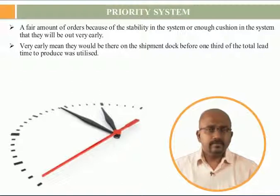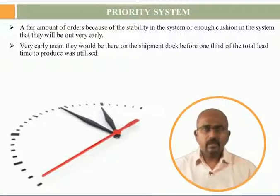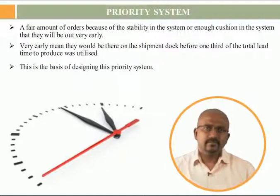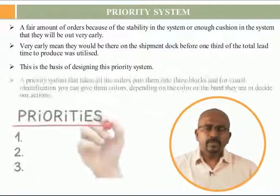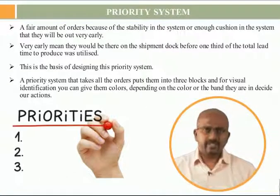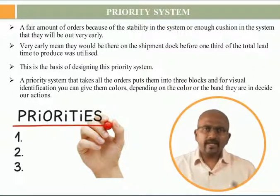And there would be some who could consume more than two-thirds. This is the basis of designing the priority system — a system that takes all orders, puts them into three blocks or three sections, and for visual identification you can give them colors. Depending on the color or the band they are in, we decide our actions.